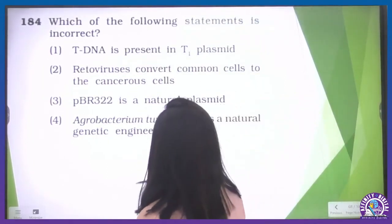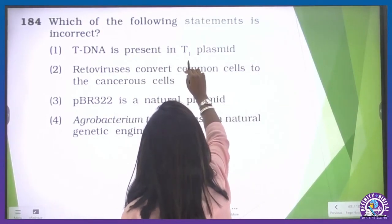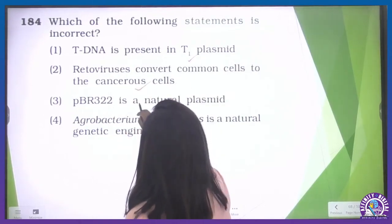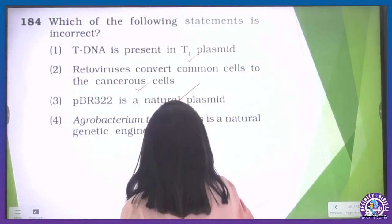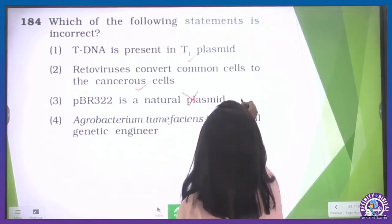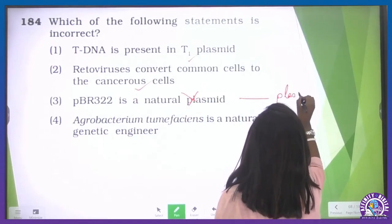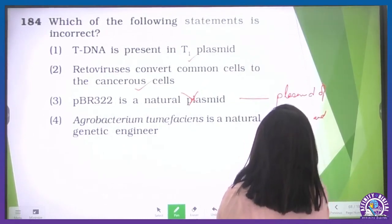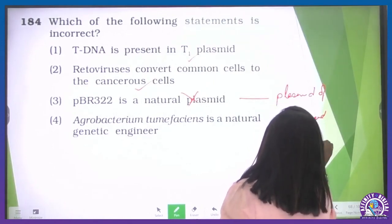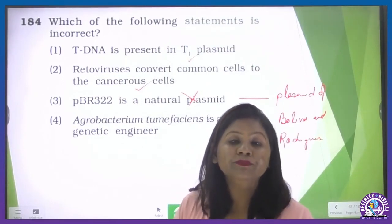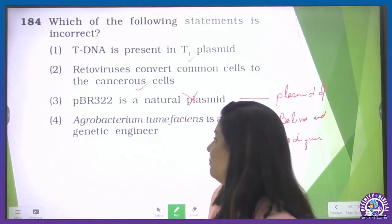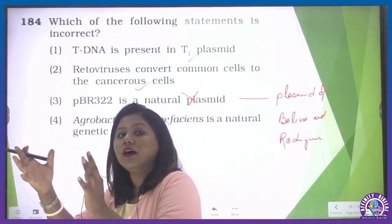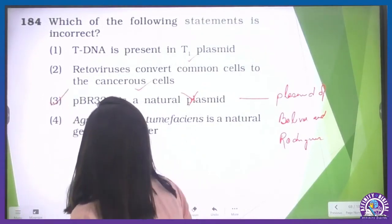Which of the following statements is incorrect? T-DNA is present in Ti plasmid — okay. T-DNA means tumor-inducing DNA. Retroviruses convert common cells to cancerous cells — correct. PBR322 is a naturally made plasmid — this is incorrect. PBR322 is a plasmid made artificially by Bolivar and Rodriguez; 322 was the successful designing number. Agrobacterium tumefaciens is a natural genetic engineer as it can transfer its Ti plasmid into healthy plants making them tumorous. So the incorrect statement is about PBR322.